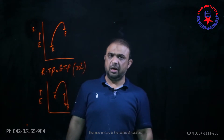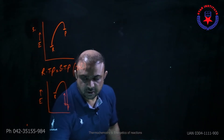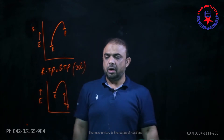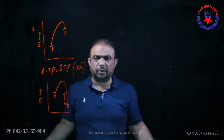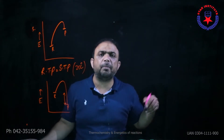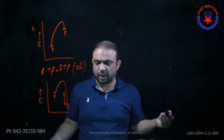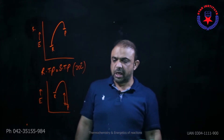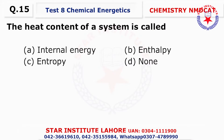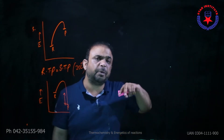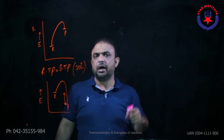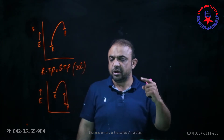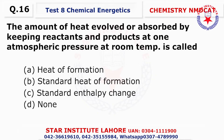Question number thirteen asks for the definition of internal energy. Question number fourteen: Bond energy and heat of hydration are calculated in terms of joules per mole, so the choice is C. Question number fifteen: The total heat content of a system is said to be enthalpy. Internal energy deals with every form of energy, while enthalpy specifically deals with heat first. So the choice is B.